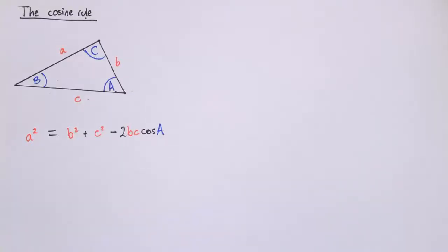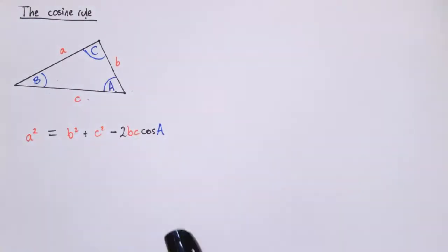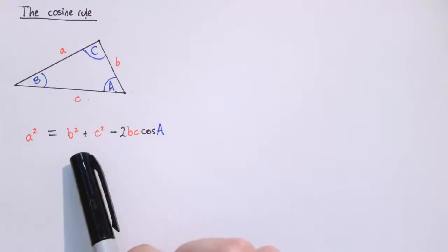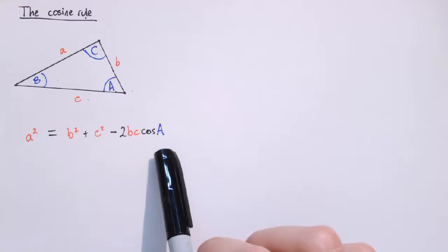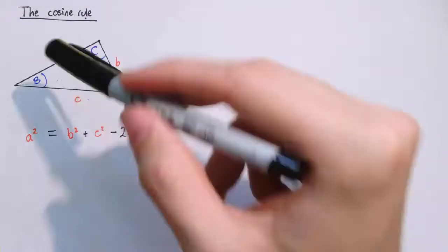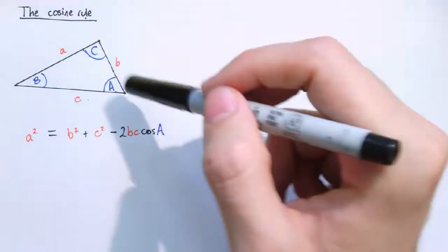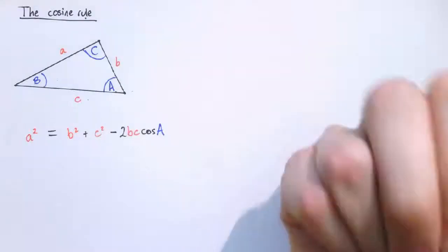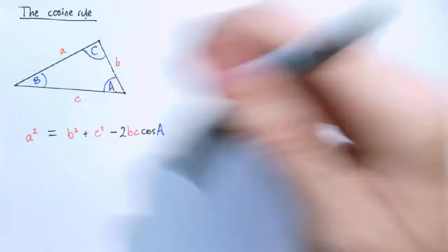So this is the cosine rule. As you can see it's about triangles and the rule says that a squared equals b squared plus c squared minus 2bc times cos A. The letters here — small a, b and c — denote the side lengths of the triangles, so the length of each of the sides, and the angles A, B and C are capitals, which are each of these angles.